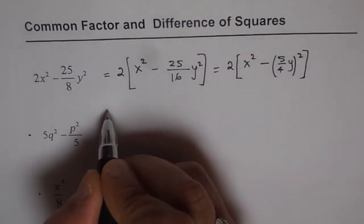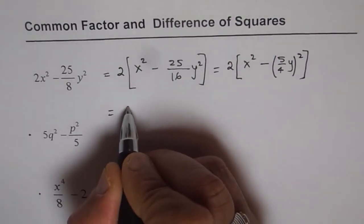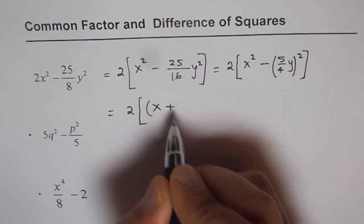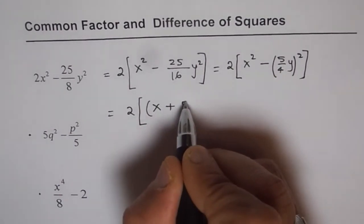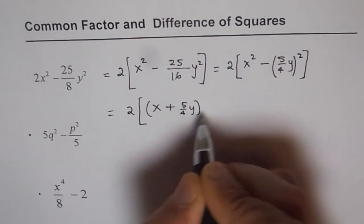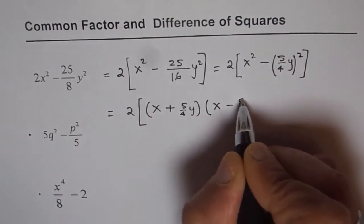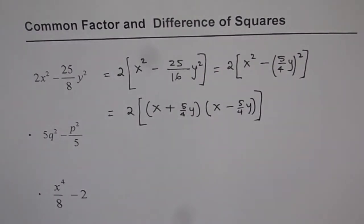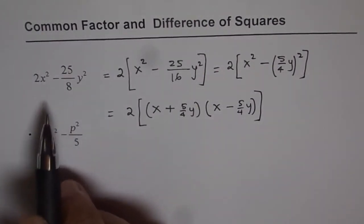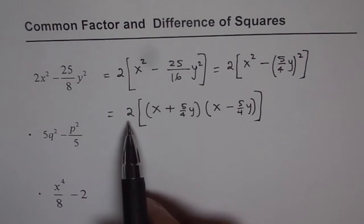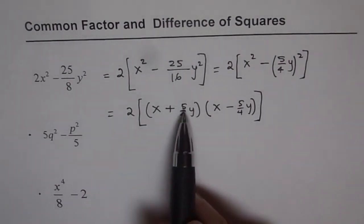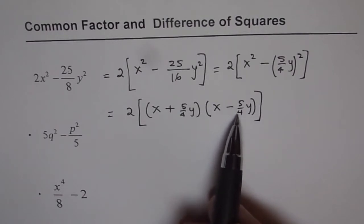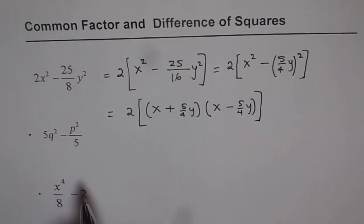Since we have difference of squares, we can factor it. So it is factored as x plus 5 over 4 y times x minus 5 over 4 y. Do you see that? So we have factored something which had fractions and we got 3 factors here. 2 times x plus 5 over 4 y times x minus 5 over 4 y. Right? So that is the factored form.